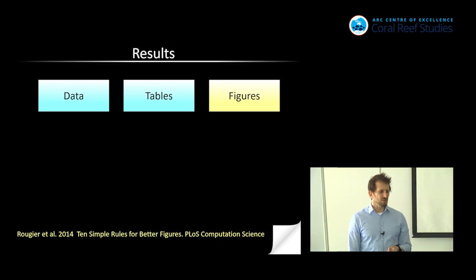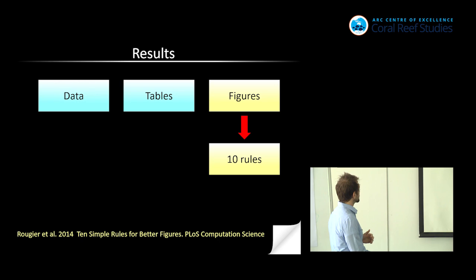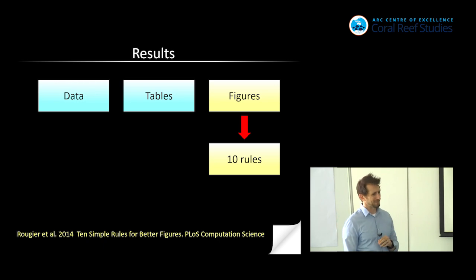I want to spend a few minutes talking about some key rules about making figures because there's a lot of basic things that people don't understand why they're doing things, and that creates problems. But there's a really cool paper in PLOS Computational Science, which was these 10 simple rules for better figures. It's kind of a hybrid between what they were doing and what I felt was important.